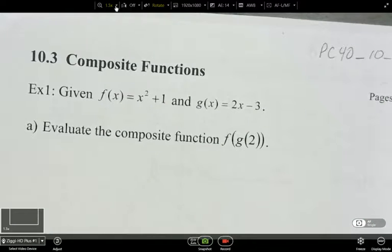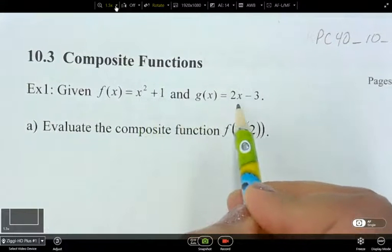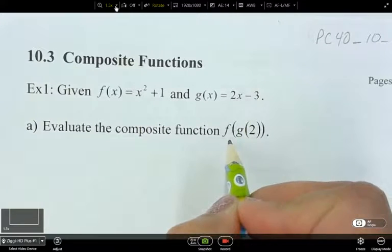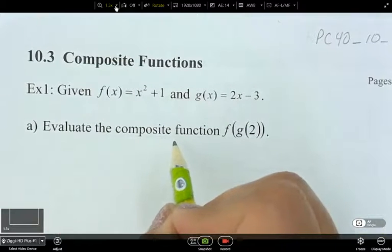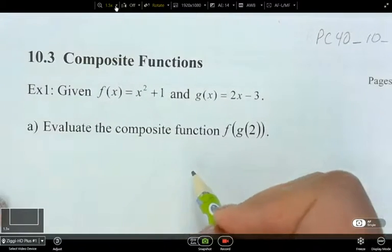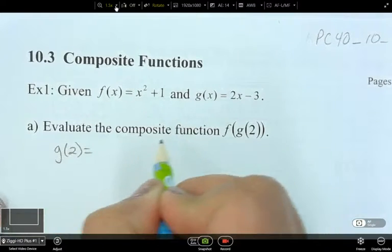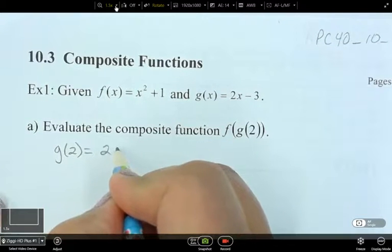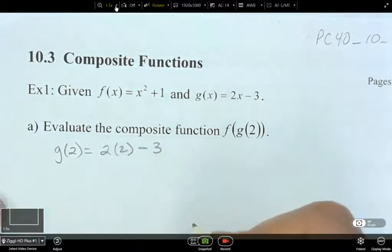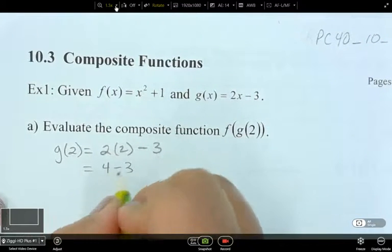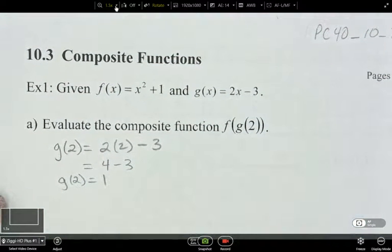So first, we're going to look at these two functions. We've got f of x is x squared plus 1, and g of x is 2x minus 3. So we've got f of g of 2. What it's saying is, evaluate the composite function f of g of 2. So why don't we first figure out what g of 2 is. Write down what the function is and substitute a 2 in for where you see an x. So I've got 4 minus 3, so g of 2 is equal to 1.